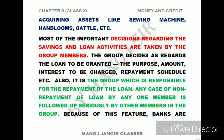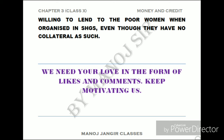Most important decisions regarding saving and loan activities are taken by the group members themselves. The group decides whether a loan will be granted, the purpose, the amount, the interest to be charged, and the repayment schedule. It is the group that is responsible for repayment of the loan. Any case of non-repayment by one member is followed up by the other members. Because of this feature, banks are willing to lend to poor women organized in self-help groups, even though they have no collateral. Collateral is not required here.